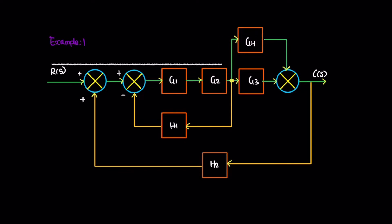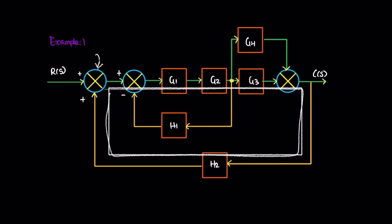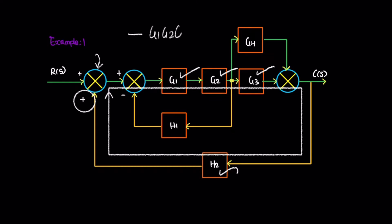Now we move to feedback. Starting from this junction and moving straight, then back the same way. Key point: this path is positive, so the result is negative. The path gain is the product of G1 × G2 × G3 and the bottom portion H2. So the path gain is negative G1 × G2 × G3 × H2.